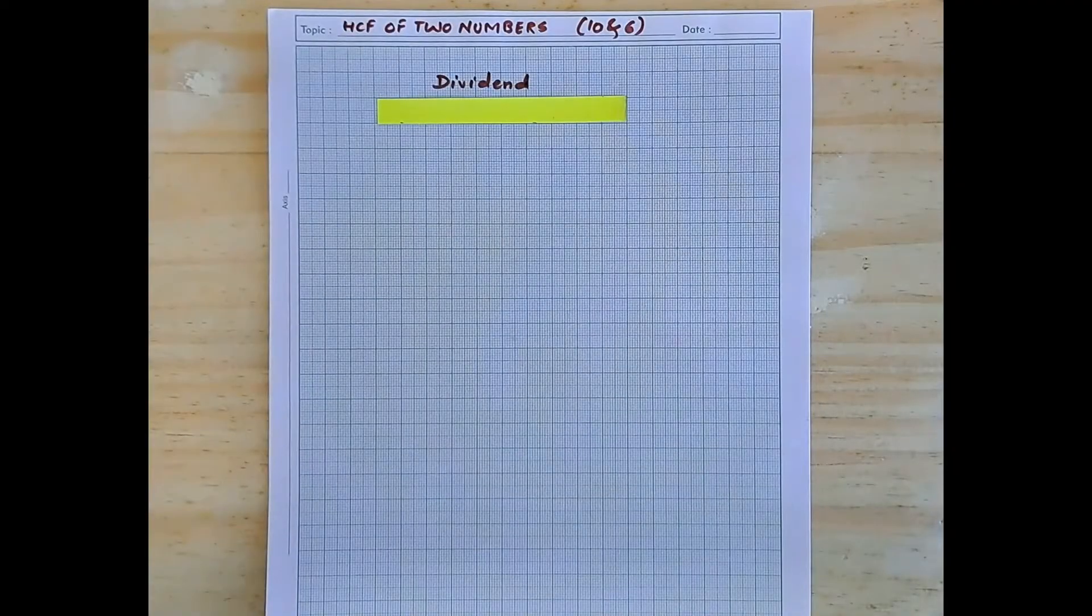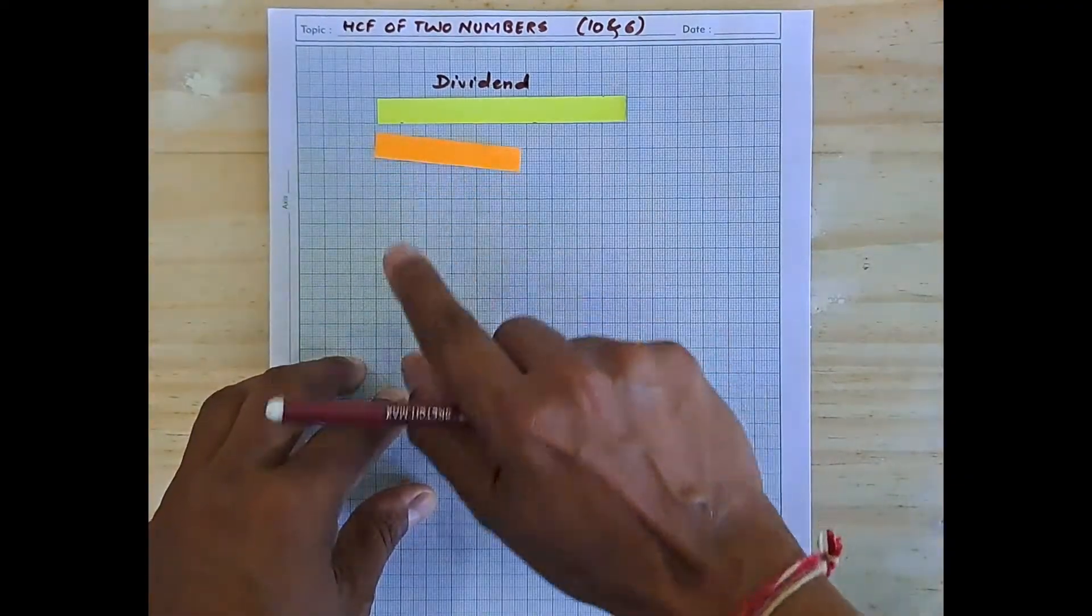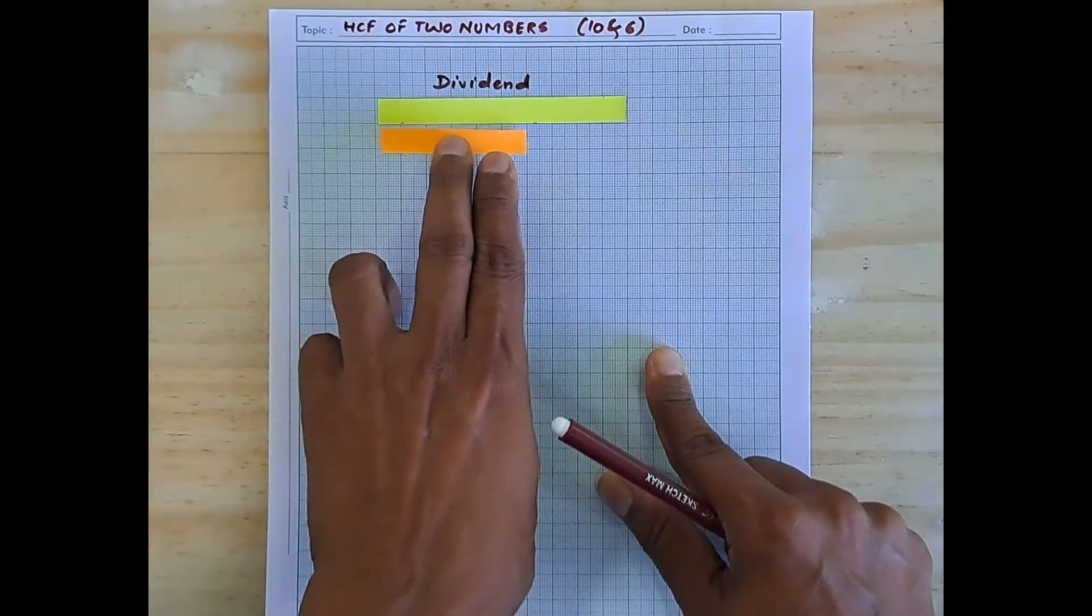And a strip of length 6 centimeter, this one cut out by using a different color. This is placed like this, so this is the divisor.